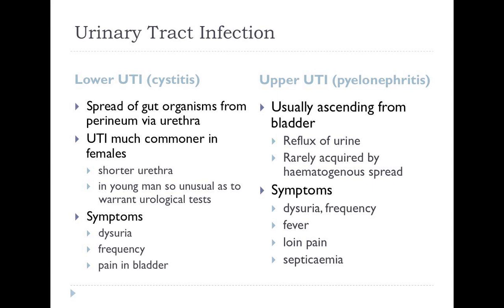Upper urinary tract infection, commonly called pyelonephritis from the infection of the kidney, is usually caused by ascending infection from the bladder, but can occasionally occur because of haematogenous spread. This is more common in diabetics and can be seen with the particularly severe condition known as emphysematous pyelonephritis, where you get gas-forming organisms within the substance of the kidney, which has a mortality of 70%. It presents with the same symptoms as lower UTI but additionally with systemic symptoms of fever, loin pain and sepsis.